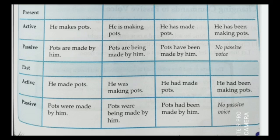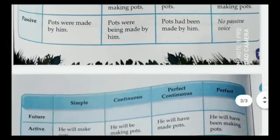For past perfect: 'He has made the pot' follows the same structure. 'The pots had been made by him.' For past perfect continuous: 'He had been making pots' — no change is possible for this tense either.